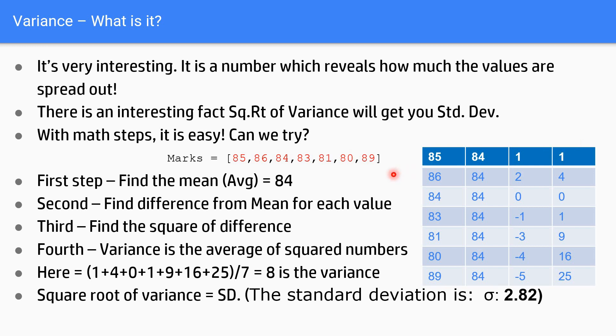Now, what is the next step? It is going to be finding out the average of these squared numbers. So, I need to add 1 plus 4 plus 0 plus 1 plus 9 plus 16 plus 25 and 7 numbers are there and hence divide by 7. So, 8 is the variance. I have calculated the variance and it is 8.